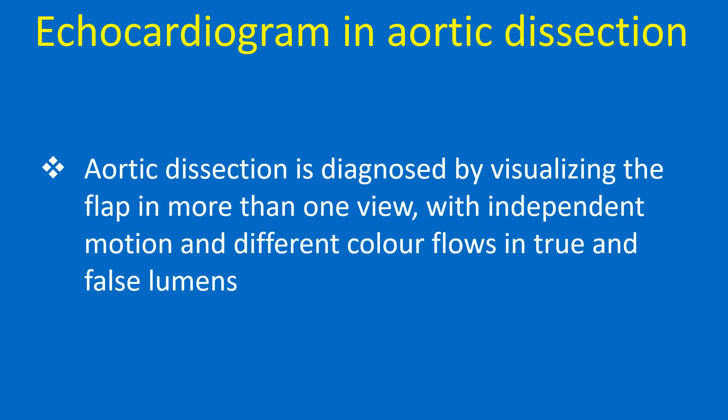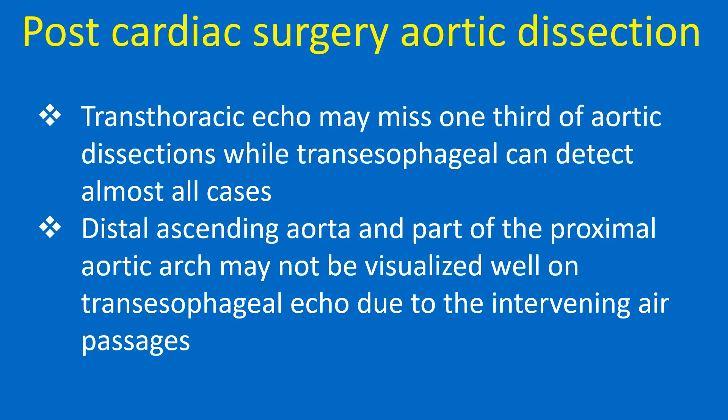Echocardiogram in aortic dissection: Aortic dissection is diagnosed by visualizing the flap in more than one view with independent motion and different color flows in the true and false lumens. Transthoracic echo may miss one third of aortic dissections, while transesophageal echo can detect almost all cases.